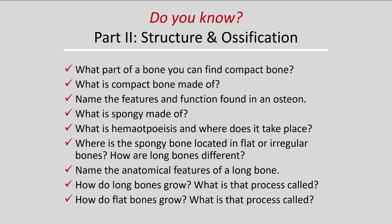You should know from this section where compact bone is found and what it is made of — those Haversian systems. Name the features and functions found in an osteon: the central canal, lamellae, lacunae, canaliculi, and Volkman's canals. Know what spongy bone is made of — trabeculae and red marrow — and what hematopoiesis is and where it takes place. Know where spongy bone is located in flat or irregular bones versus how long bones differ, the anatomical features of a long bone, and the names of the two ossification processes.